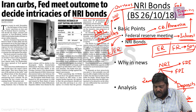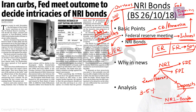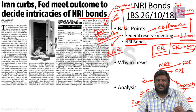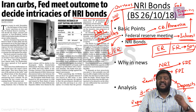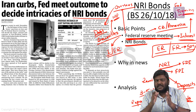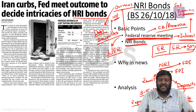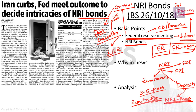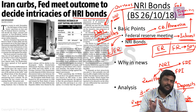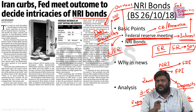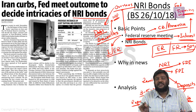Why will an NRI invest in these bonds? The features of NRI bonds are: first, the tenure is usually three to five years. Second, the whole amount can be repatriated. For example, if I am an NRI and invest $100 in NRI bonds at 10% interest, I can take out all $100 plus $10 interest after maturity - there is no restriction on taking out these dollars. This is called 100% repatriation. Third, NRI bonds are tax-free; earnings are usually not taxed by the Government of India.